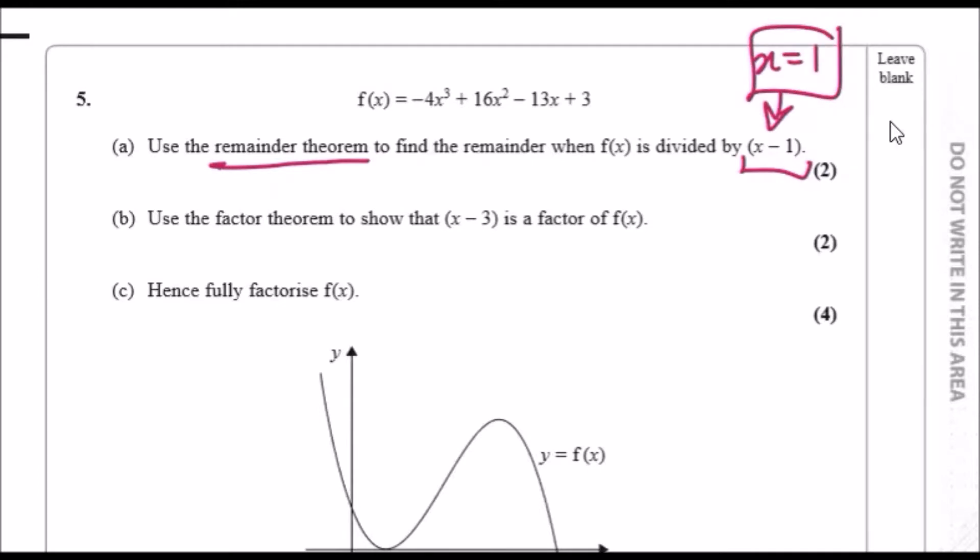So actually we're trying to find the value of f(1). Plug in when x equals one, and when you do that you should get a remainder. Just smash one into this and you should get the answer of two. So the remainder here is two. That's it. Two marks for that, so easy.